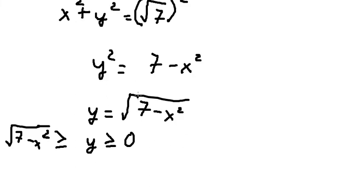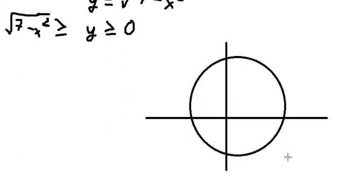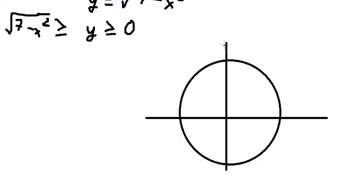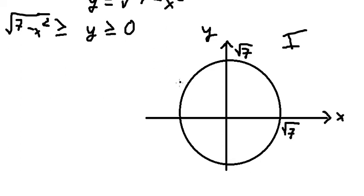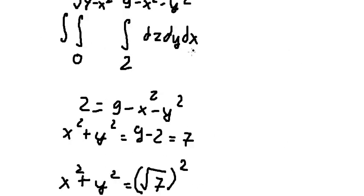Now let me illustrate the circle. In the first octant, we have square root of 7 on the positive axes and we concentrate on this region. For x, we see that it goes from 0 to the square root of 7.